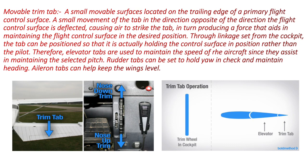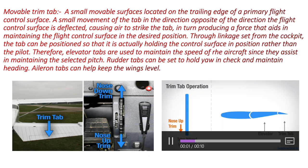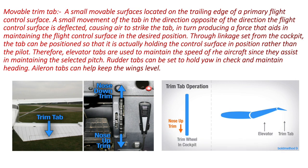Now watch this video for a better understanding of the movement of the elevator and trim tab in both positions: nose down trim position and nose up trim position. Here, at nose up trim position, the trim tab goes down. The air strikes the tab so that it will move the elevator up. By moving the elevator up, the aircraft nose moves up so that it can maintain level flight attitude.